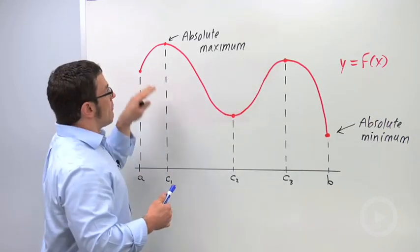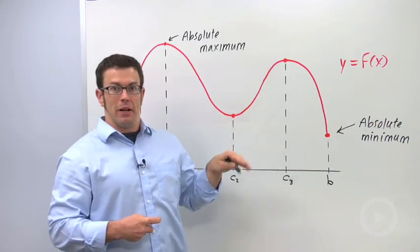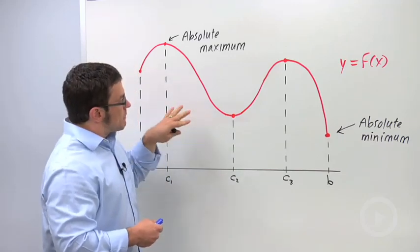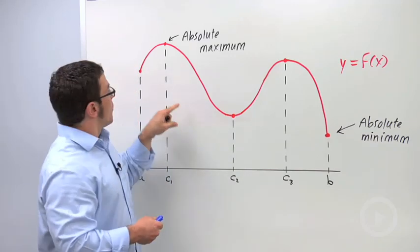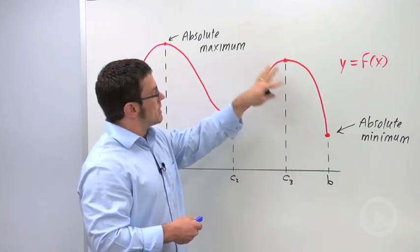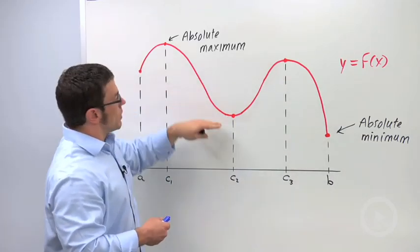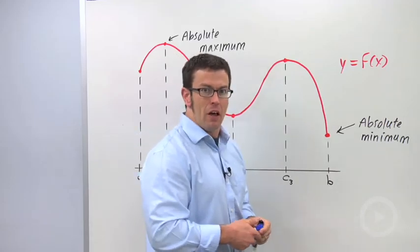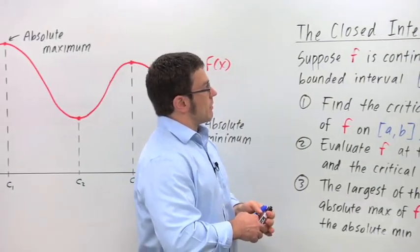An optimization problem is all about finding absolute maxima and minima. And in this first method that we study, called the closed interval method, we are going to look at endpoints and critical points. These are the only places that you need to look when you're looking for an absolute max or min for a function over a closed bounded interval.